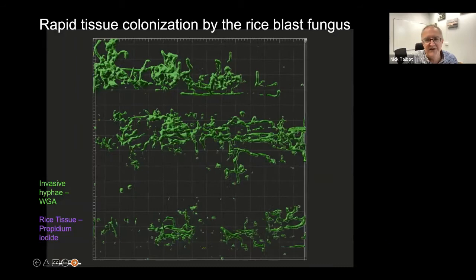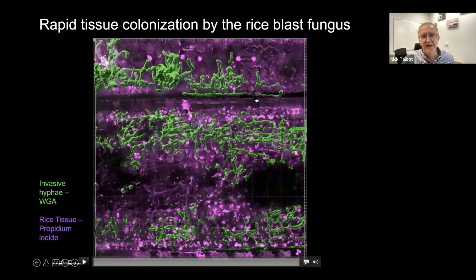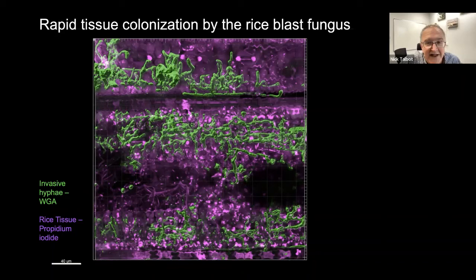The consequence is that the fungus can move really rapidly in plant tissue. In a three-dimensional reconstruction of a rice leaf, the bulbous branched hyphae in green have spread into epidermal and mesophyll cells and also into vascular tissue, where they become more classically cylindrical. Those effectors are incredibly effective at suppressing immunity. This is only about two days after infection and the fungus is already rapidly colonizing plant tissue.